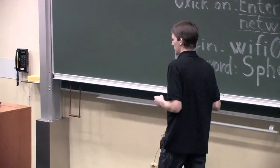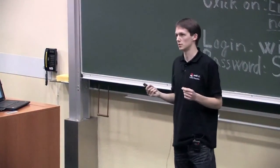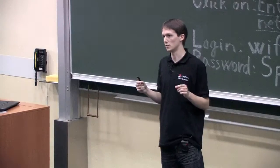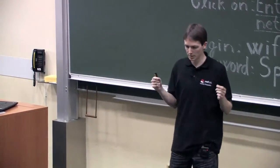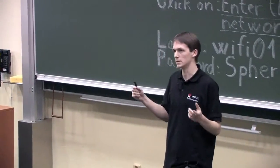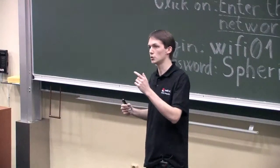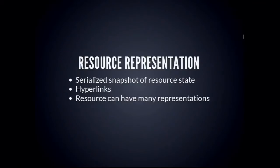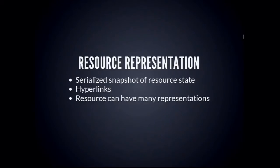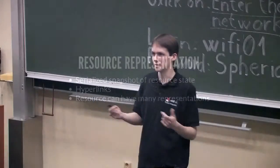Resource representations are snapshots of a resource's state serialized into some format. Interestingly, they contain hyperlinks, so when you fetch a resource you usually get links to other resources, allowing you to travel through the API and discover all resources. There can be many representations for one resource because of different media types — for example, XML and JSON.